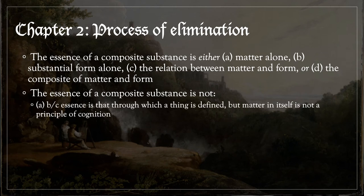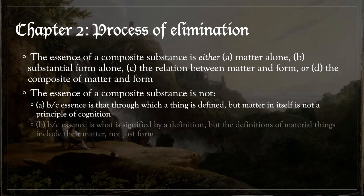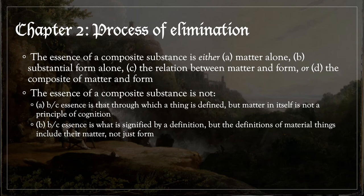He says that the essence is not matter, or A, because essence is that through which a thing is defined, but matter in itself is not a principle of cognition. Likewise, the essence of a composite substance is not B, substantial form. That's because essence is what is signified by definition, but the definitions of material things — that is, the definitions given in natural science or natural philosophy — always include matter, not just form. You cannot define a tree without mentioning wood. You cannot define an organism without mentioning organs or parts.